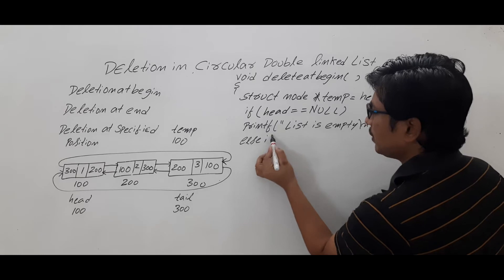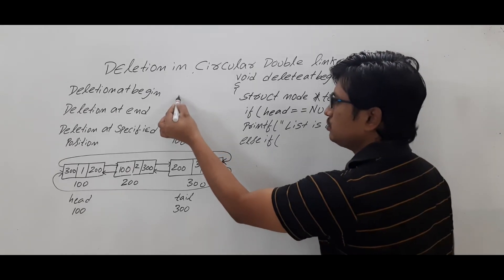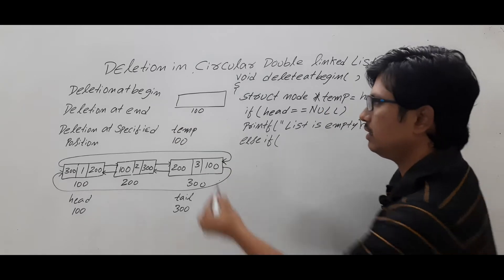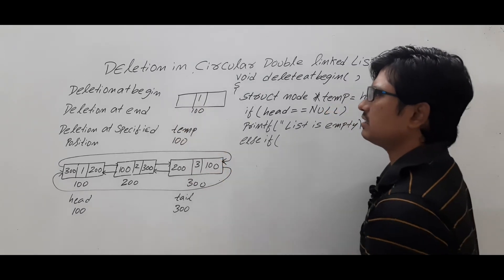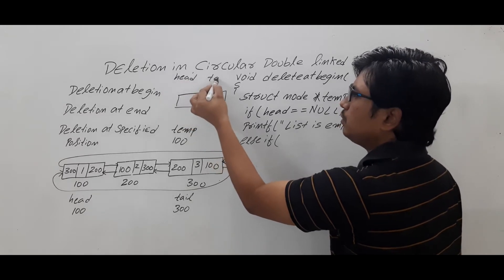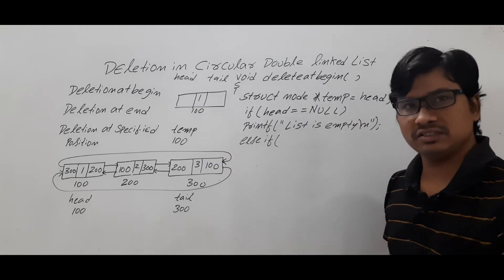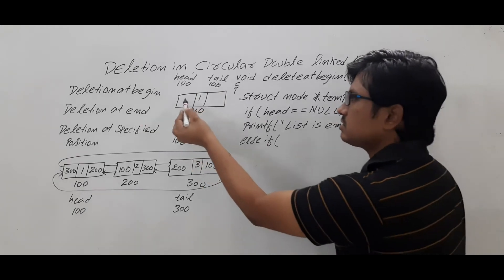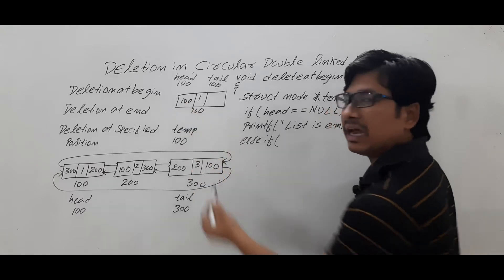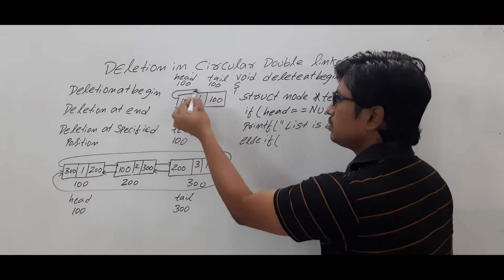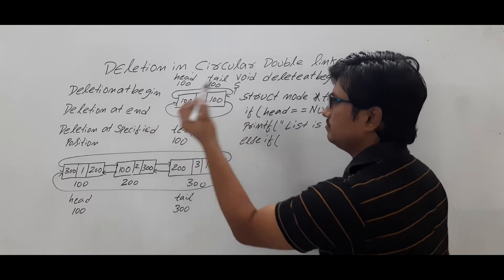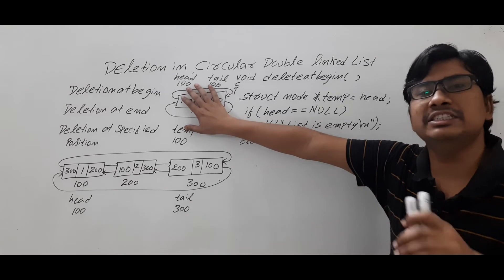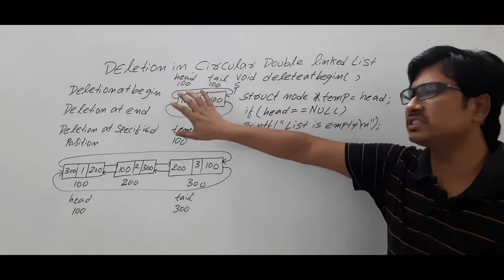With else if I want to check another condition — let's assume there is only one node in the list at address 100 with some data. If there is only one node, head and tail both point to this node. In a circular double linked list, the previous and next pointers of this single node both hold address 100, so the node points to itself. If you delete this single node, the list becomes empty.